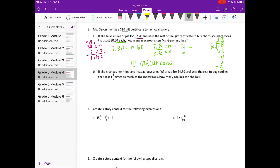Part b: If she changes her mind and instead buys a loaf of bread for four dollars and sixty cents and uses the rest to buy cookies that cost one and a half times as much as the macaroons, how many cookies can she buy? She changes her mind, she still has that ten dollar gift card. So let's do ten dollars, but this time she buys four dollars and sixty cent loaf of bread. Ten minus six is four, nine minus four is five, so now she has five dollars and forty cents to work with.